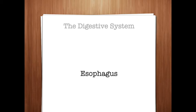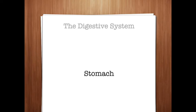Esophageal varices are enlarged and swollen veins at the lower end of the esophagus; severe bleeding occurs if one of these veins ruptures. A hiatal hernia is a protrusion of part of the stomach through the esophageal sphincter in the diaphragm — 'hiate' means opening. This condition may cause esophageal reflux and pyrosis. Pyrosis, also known as heartburn, is the burning sensation caused by the return of acidic stomach contents into the esophagus — 'pyre' means fever or fire and '-osis' means abnormal condition.